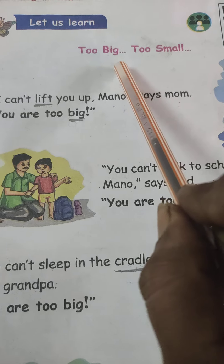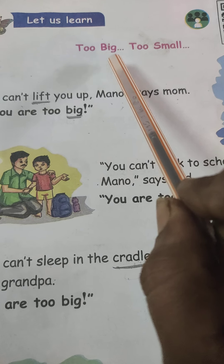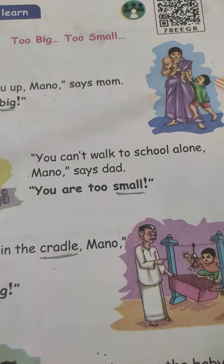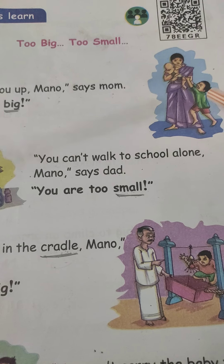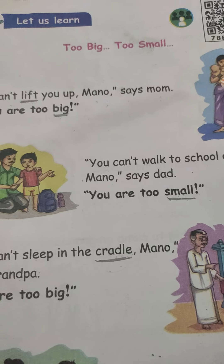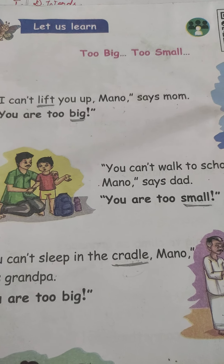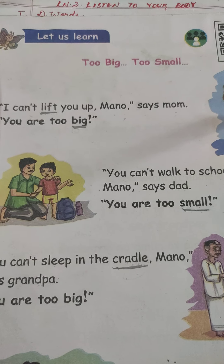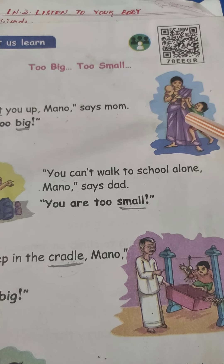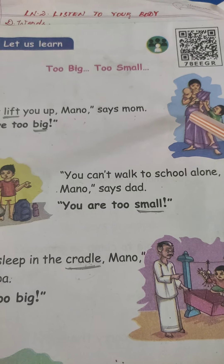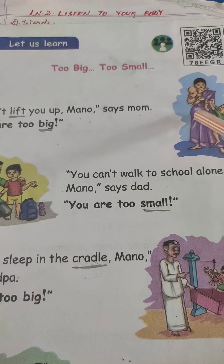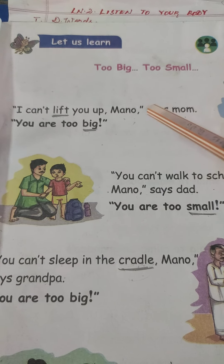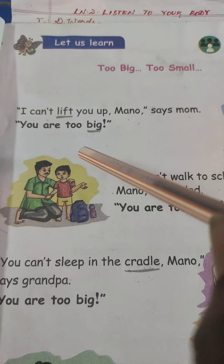First one: too big, too small — this is for learning. Here the name of the boy is Mano. I can't lift you up. Mano says, mom, you are too big. Because the mother is having one child with her, so she is not able to lift Mano. So that is why mother is saying like that.